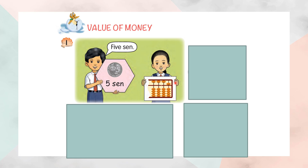Look at this abacus. Five cent is here — this is five cent. This means this is five.